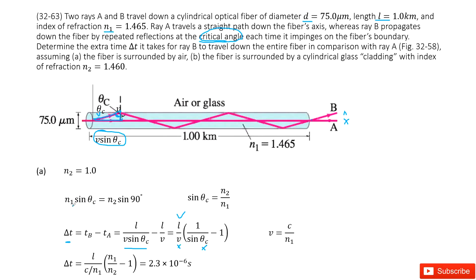N1 is given in the problem. We need to solve for sine theta_c. For the first case, the fiber is surrounded by air, so N2 equals 1.0. Since sine 90 degrees equals 1, we can solve for sine theta_c from this equation.